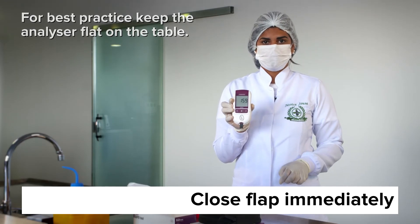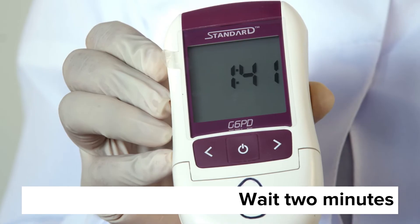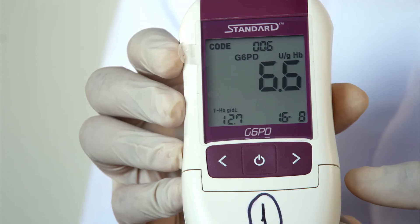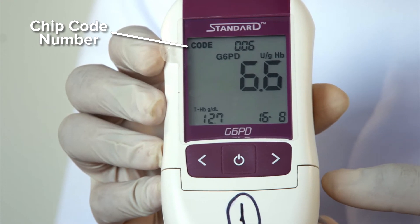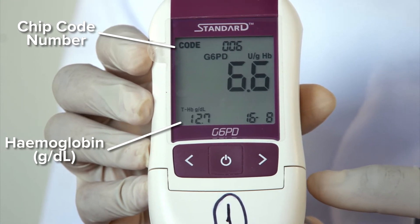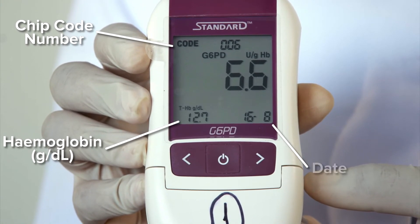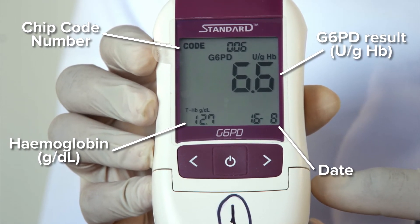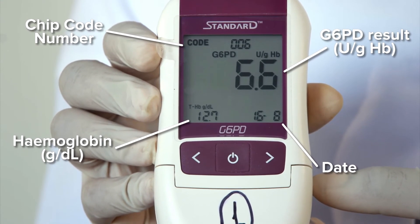The analyzer will now begin counting down two minutes. When the time is up, the analyzer will display the following information: the chip code number, the hemoglobin measurement in grams per deciliter, the date, and the G6PD result in units per gram of hemoglobin.